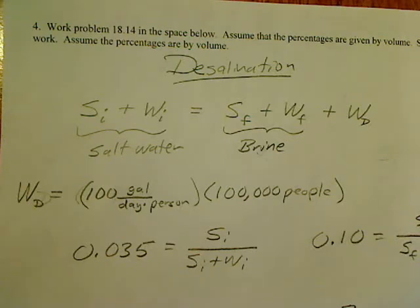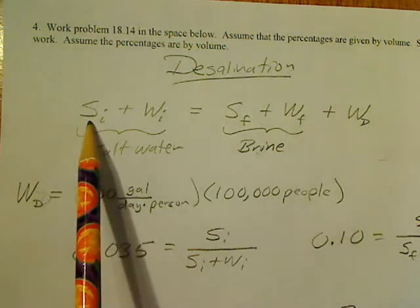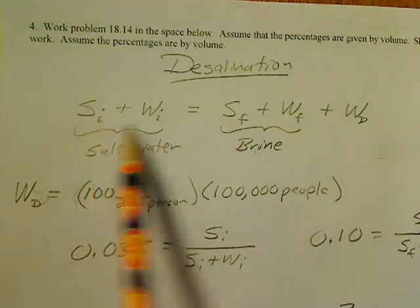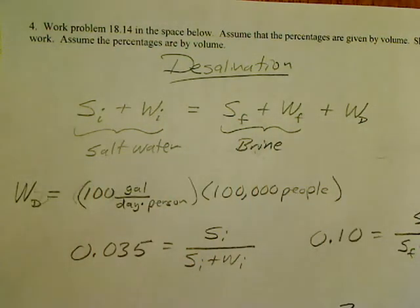So take a look at the wording of the problem and see if this notation makes sense to you. You might also notice that the S sub I here, the initial salt, is equal to the final salt over here. So the I's mean initial, the F's mean final, and the D means drinking.